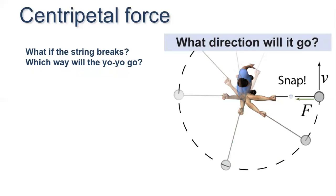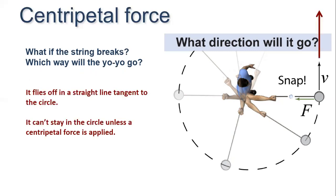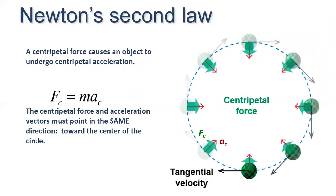What will happen if the spring breaks? Which way will the object go? The yoyo flies off in a straight tangential direction. The object cannot stay in the circle unless a centripetal force is applied. A centripetal force causes an object to undergo centripetal acceleration, where F = ma.